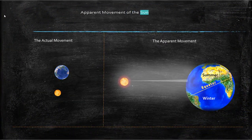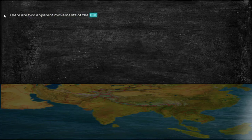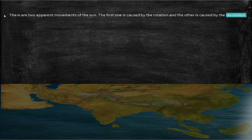Apparent movement of the sun. There are two apparent movements of the sun. The first one is caused by the rotation and the other is caused by the revolution. Let's learn them in detail.